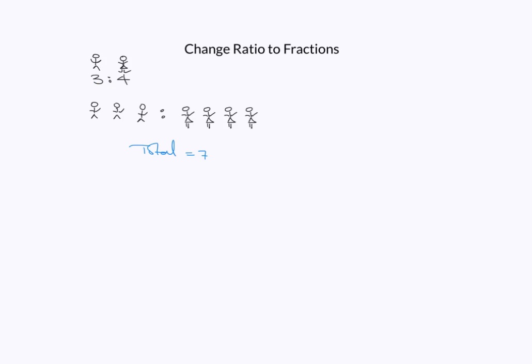There are 7 students in total. Just like we did way back in primary school, if I've got 7 students and 3 of them are boys, then it means that the boys would be three sevenths, and it means that the girls will be four sevenths.